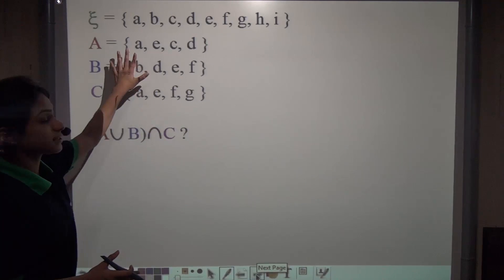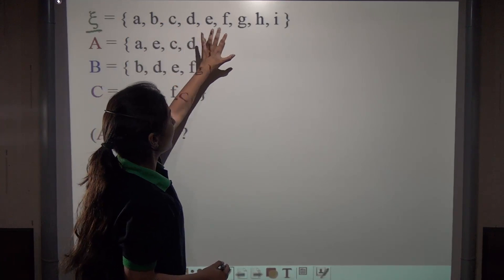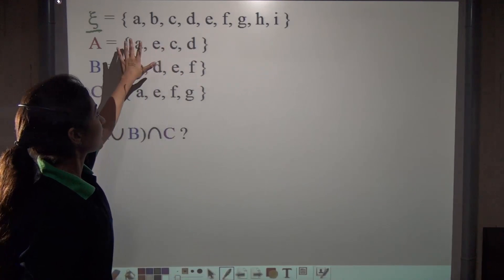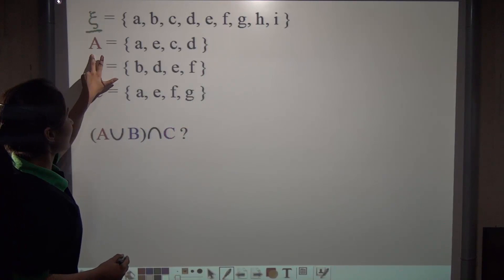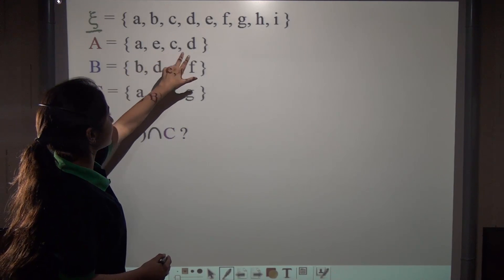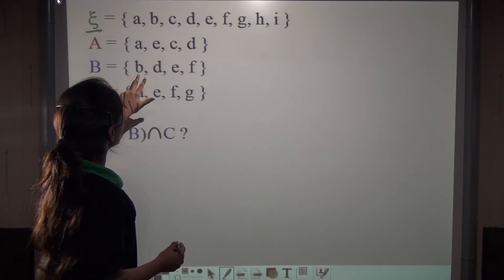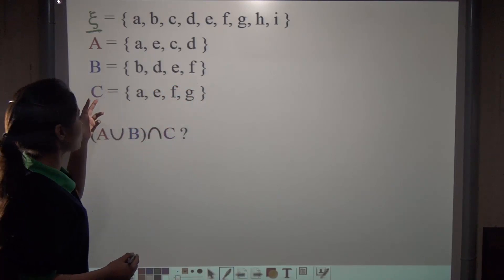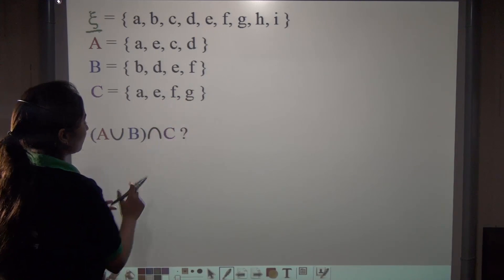Similarly, we have a sum here. Here the universal set is {a, b, c, d, e, f, g, h, i}. These are some letters of the English alphabet. Now set A refers to {a, e, c, d}. Set B refers to {b, d, e, f}. And we also have set C here representing the letters {a, e, f, g}. Now similarly, find out (A∪B)∩C for me.